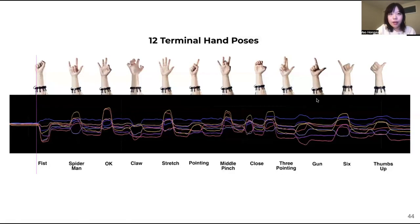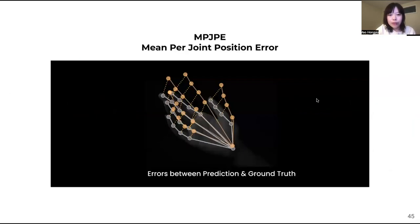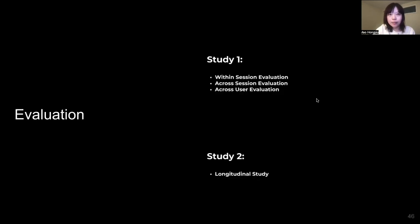Now let's talk about how we evaluate the system. We ran two user studies to evaluate the performance of EITPose across a total of 22 participants and 12 terminal hand poses. Our machine learning model uses an extra tree regressor in different configurations to evaluate the system's performance. We use MPJPE, which is mean per joint position error, to evaluate the result. The lower the error means the higher the accuracy.